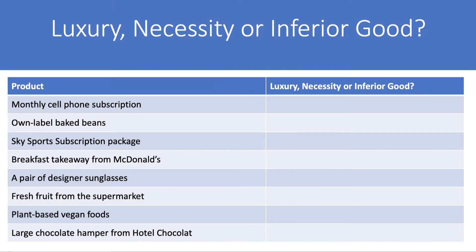Here's a little exercise we did in class — it might be worth pressing the pause button. I gave my students eight products and asked them to think: is it a luxury, necessity, or inferior good? Have a go, press pause, and when you're ready I'll offer my thoughts. The crucial thing is that context matters. What is a necessity to one person could be a luxury to another, or even an inferior good to someone else.